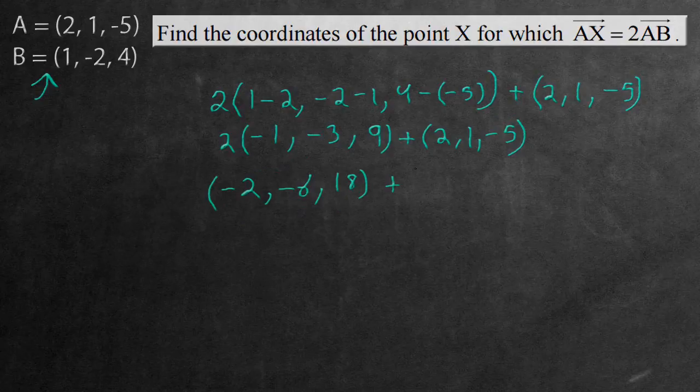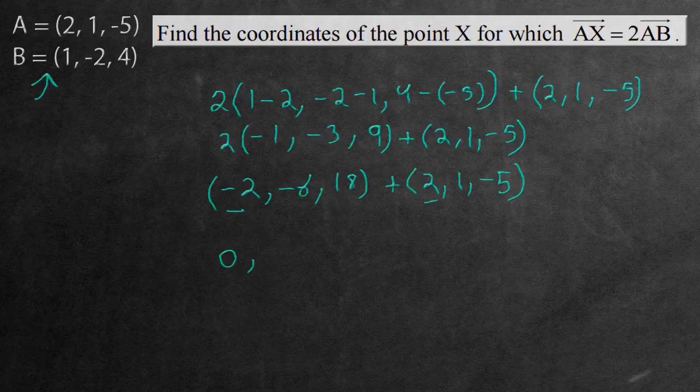Now we want to add these two vectors. So if we added them, we have the negative 2 and the positive 2. That gives us a 0, comma. Then we have negative 6 and a 1. That's negative 5. And we have 18 and negative 5. That's going to give us a positive 13. And this here is going to be the vector of X.